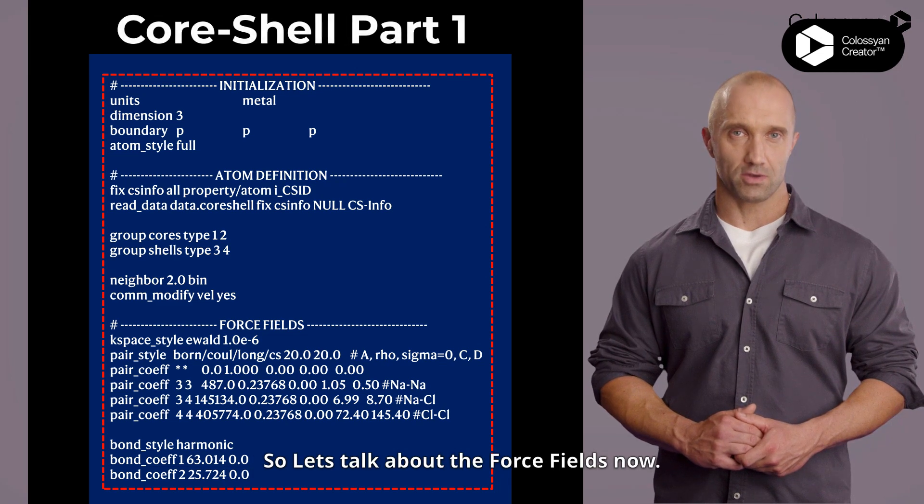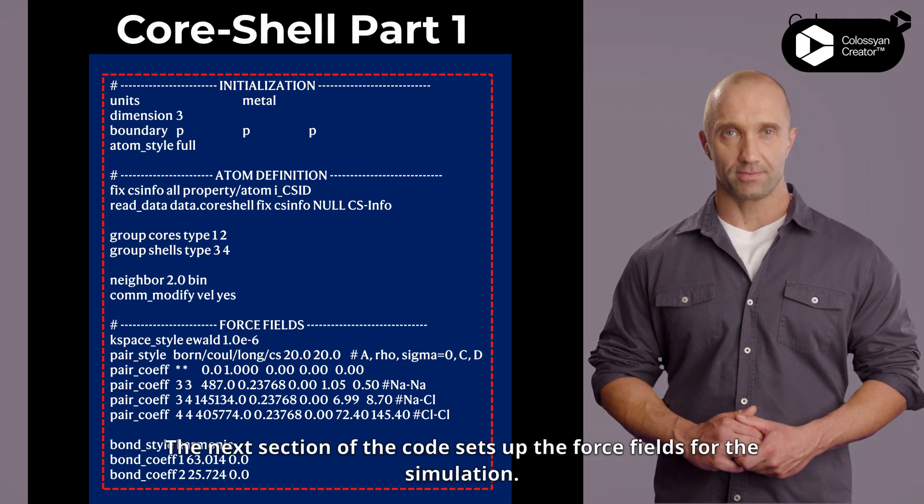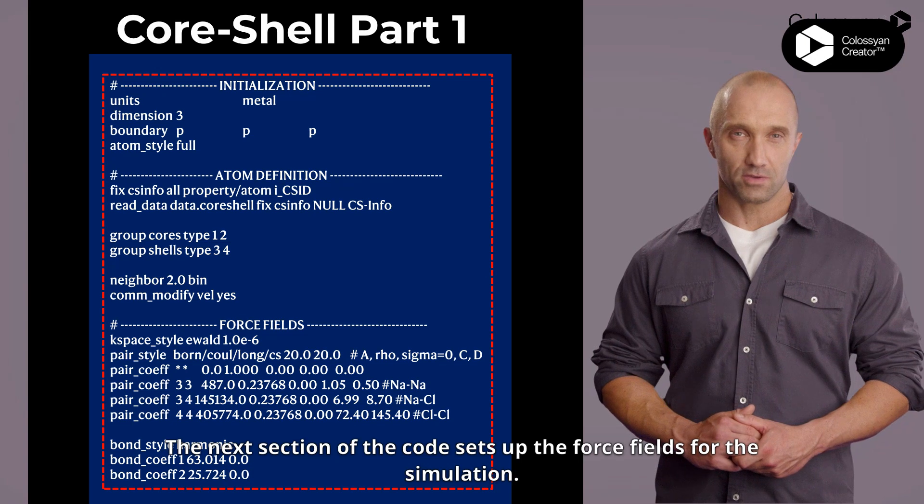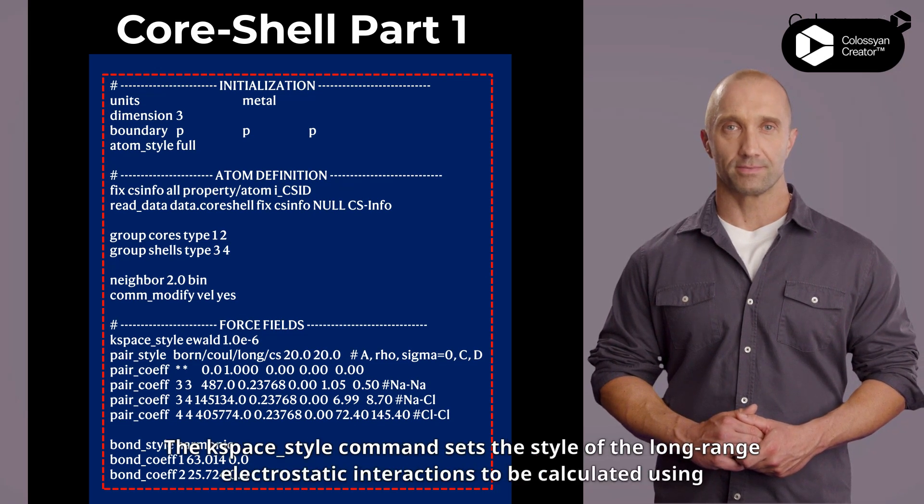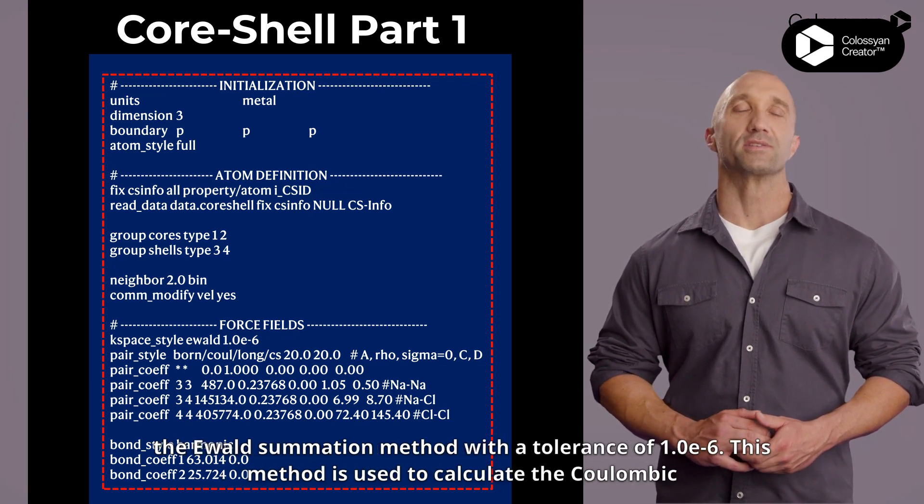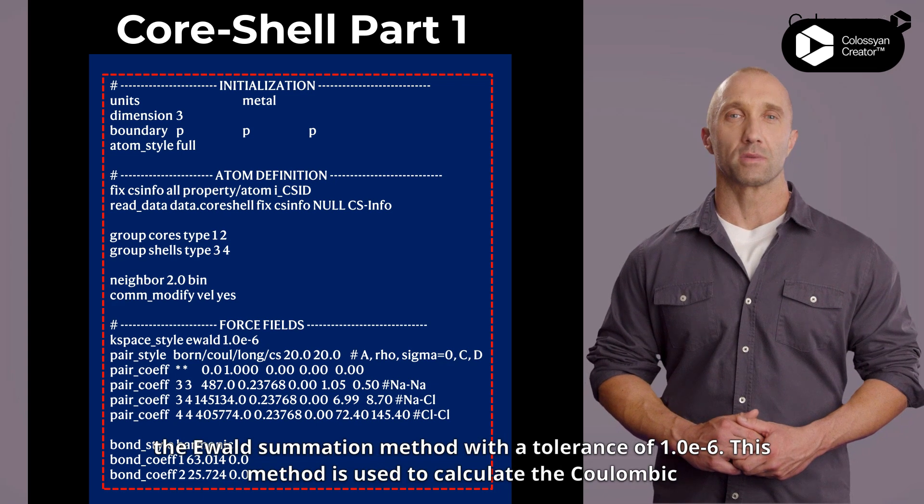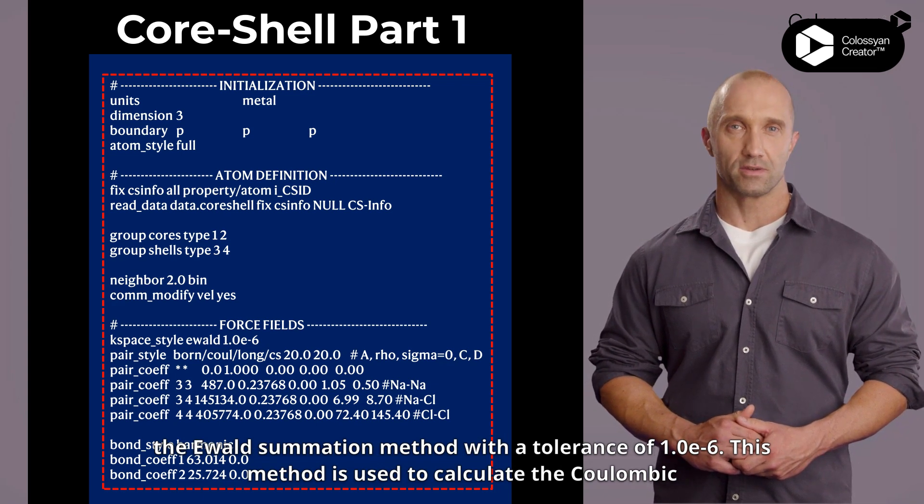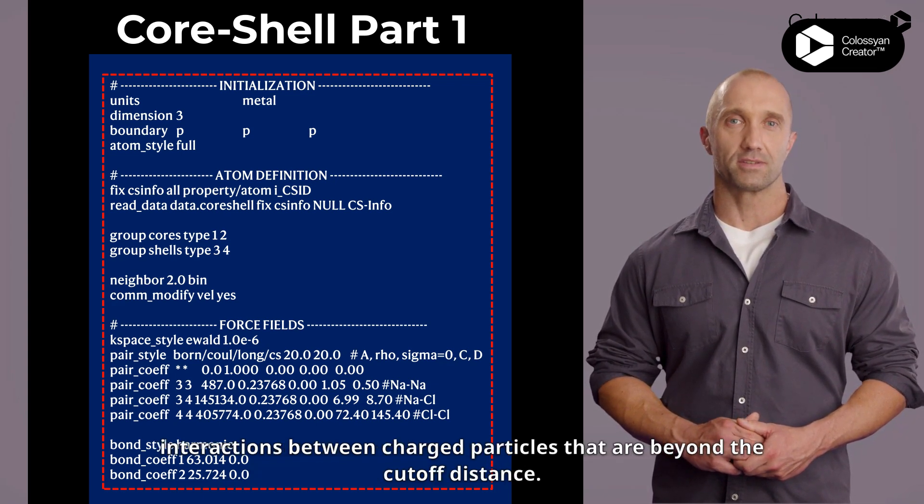The vel yes argument is used to communicate velocities between processors, which can improve the accuracy of the simulation. Let's talk about the force fields now. The next section of the code sets up the force fields for the simulation. The kspace_style command sets the style of the long-range electrostatic interactions to be calculated using the Ewald summation method with a tolerance of 1.0E-6. This method is used to calculate the Coulombic interactions between charged particles that are beyond the cutoff distance.